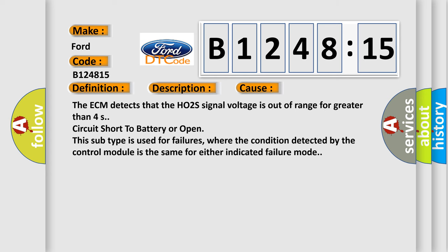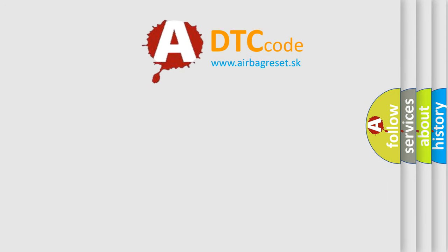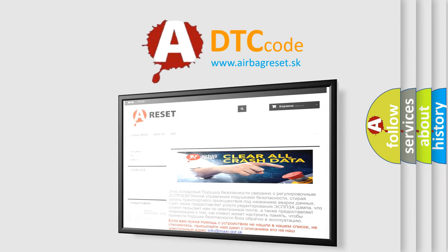This diagnostic error occurs most often in these cases. The ECM detects that the H02S signal voltage is out of range for greater than 4 seconds, circuit short to battery or open. This subtype is used for failures where the condition detected by the control module is the same for either indicated failure mode.